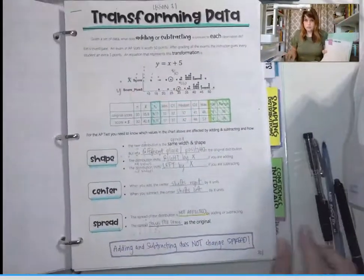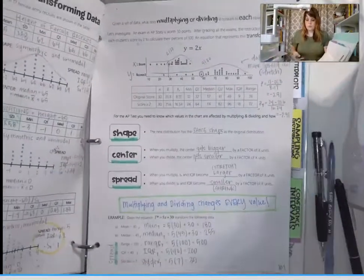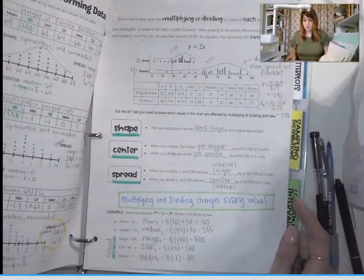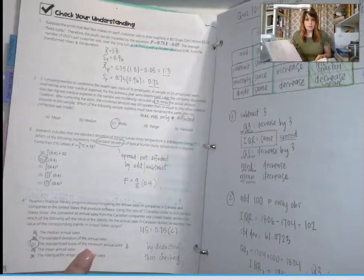That's page 301. Page 302 is an investigation. Page 303 is multiplying and dividing. Page 304 is a check for understanding.